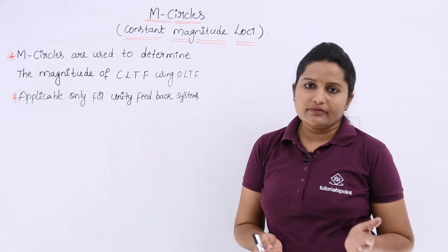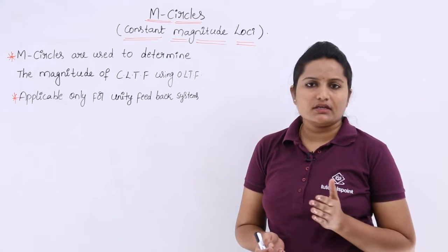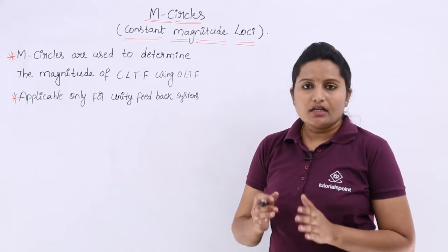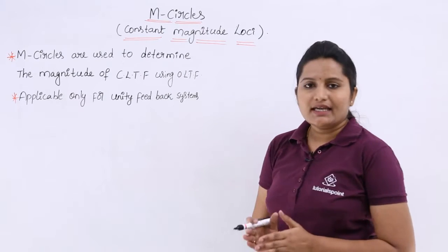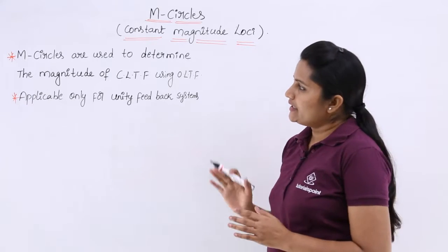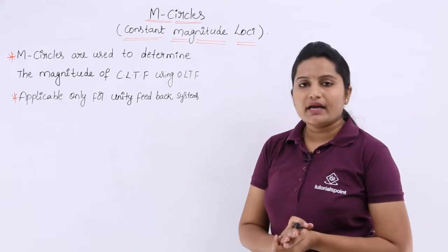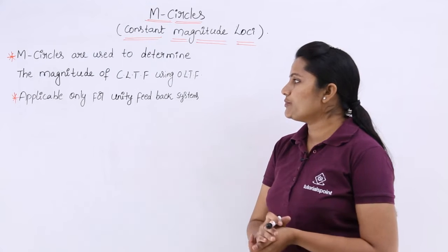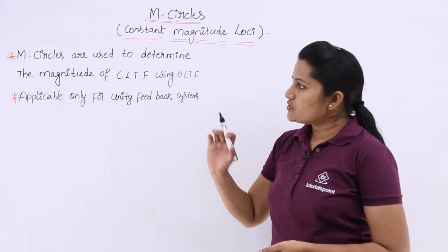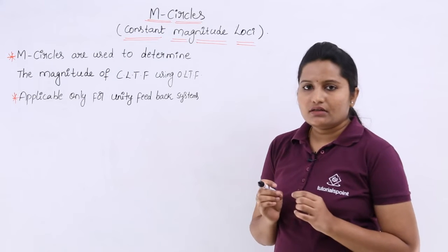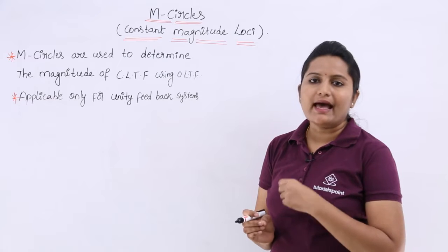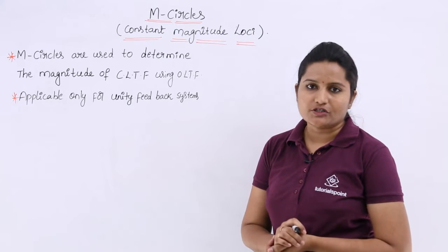Earlier we discussed all different topics like Bode plots, Polar plots, Nyquist plots, and Routh arrays. Now we are doing stability analysis using M circles. Generally, M circles are used to determine the magnitude of the closed-loop transfer function using the open-loop transfer function. M circles determine the closed-loop magnitude from the open-loop transfer function.